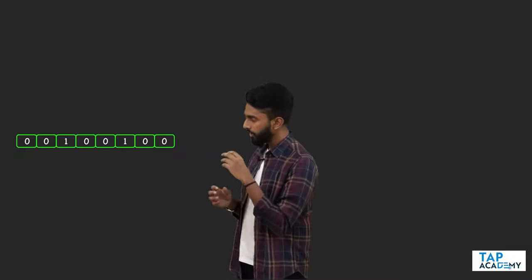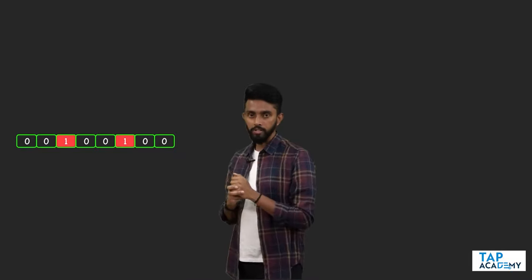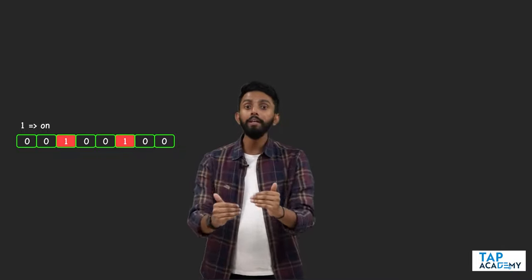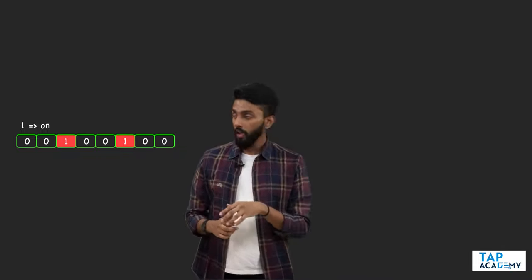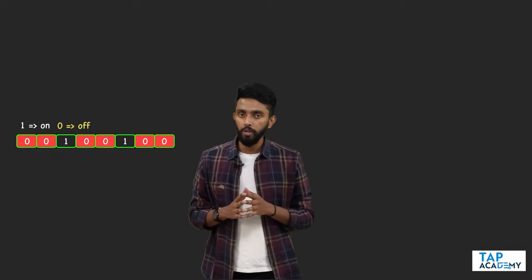Let us assume I have a binary number like this. The first thing you must understand is: whenever I see a one, I say the bits are on. Wherever I see a zero, I say the bits are off. So one means on, zero means off.